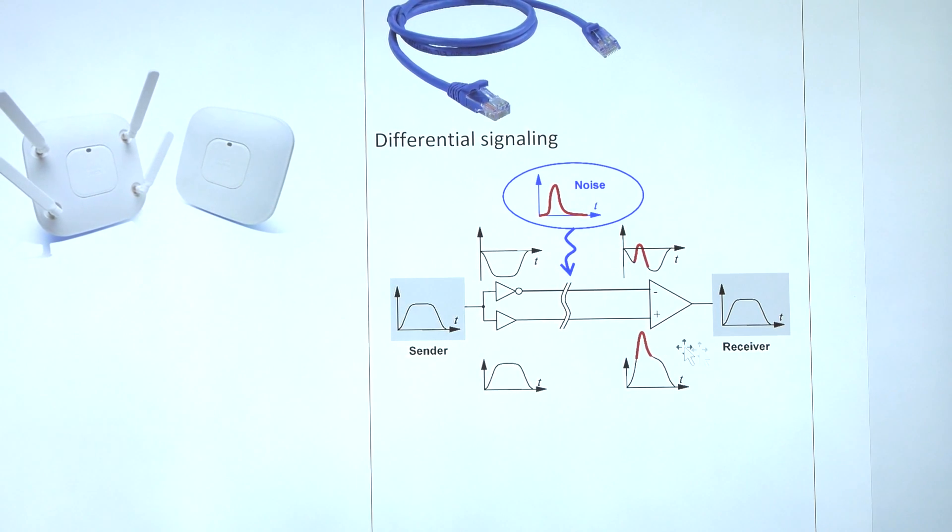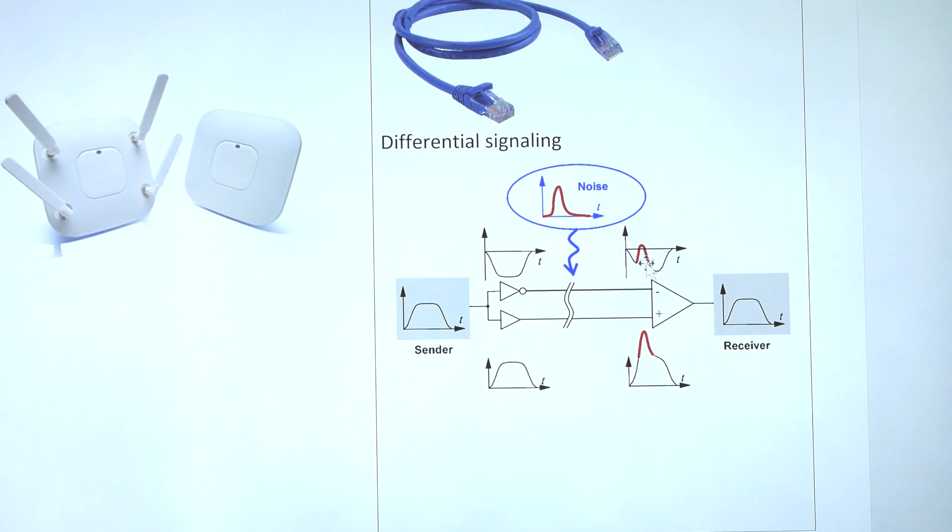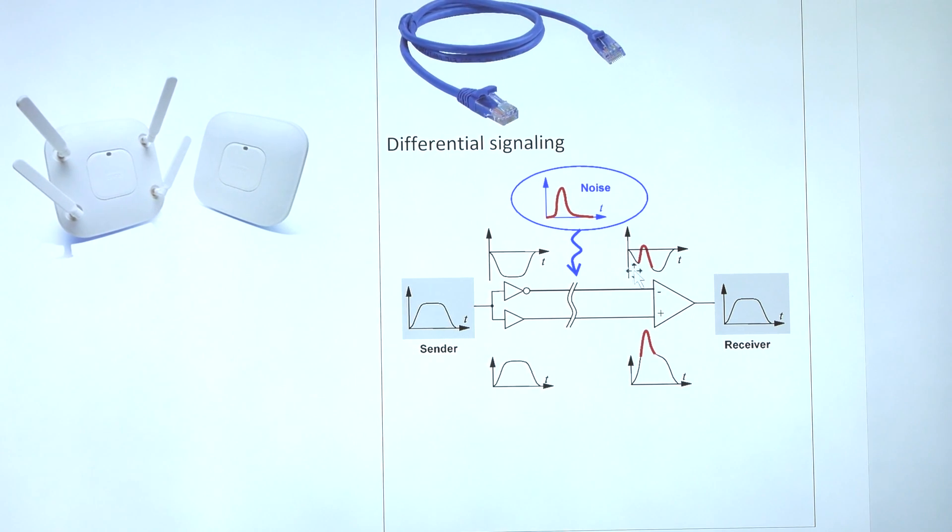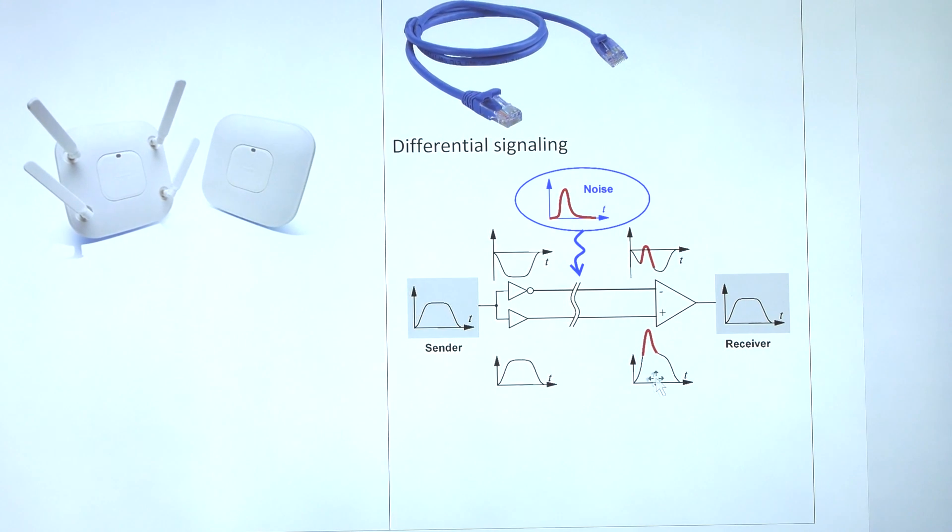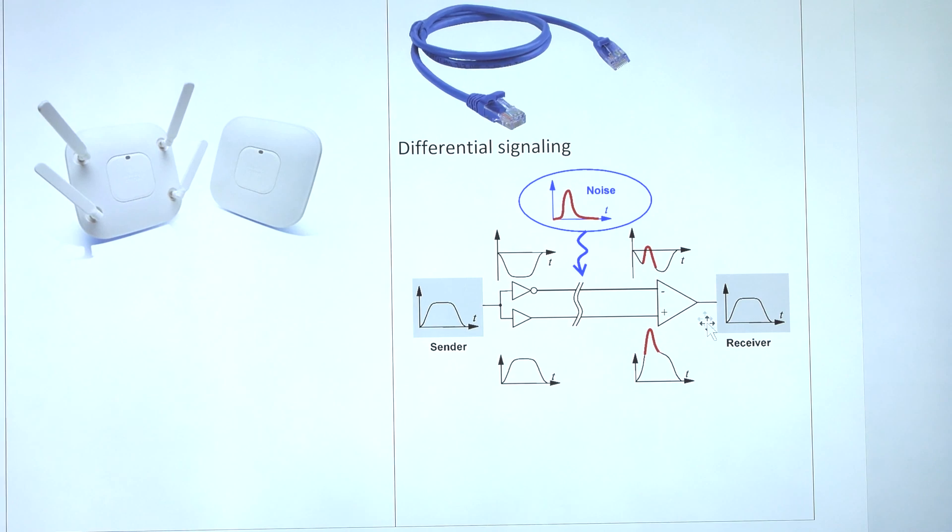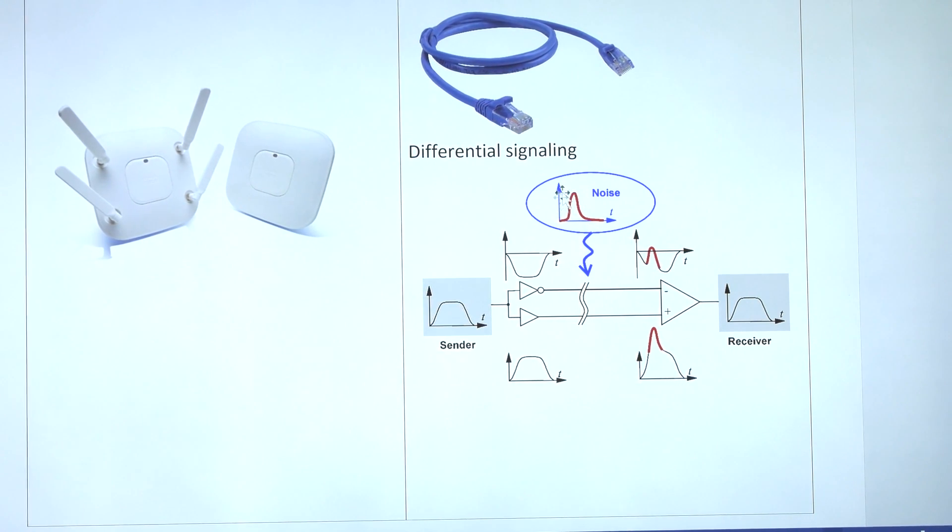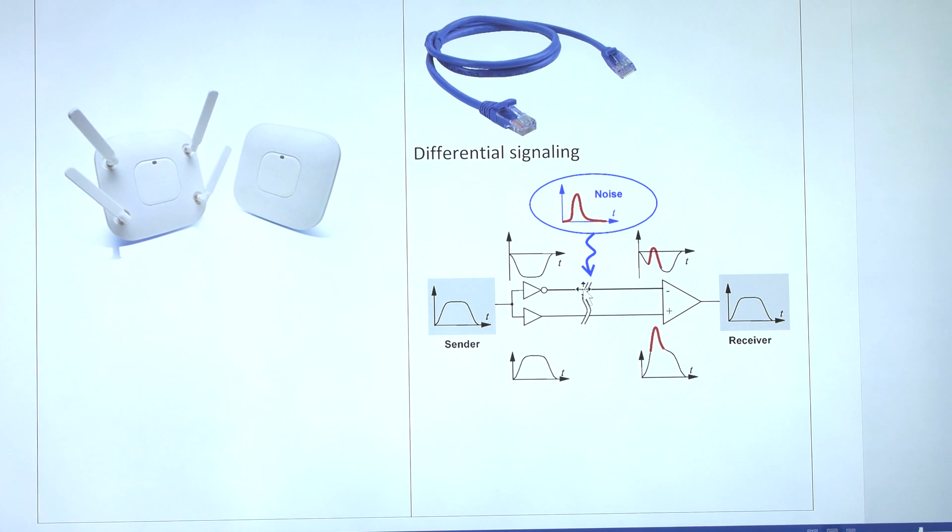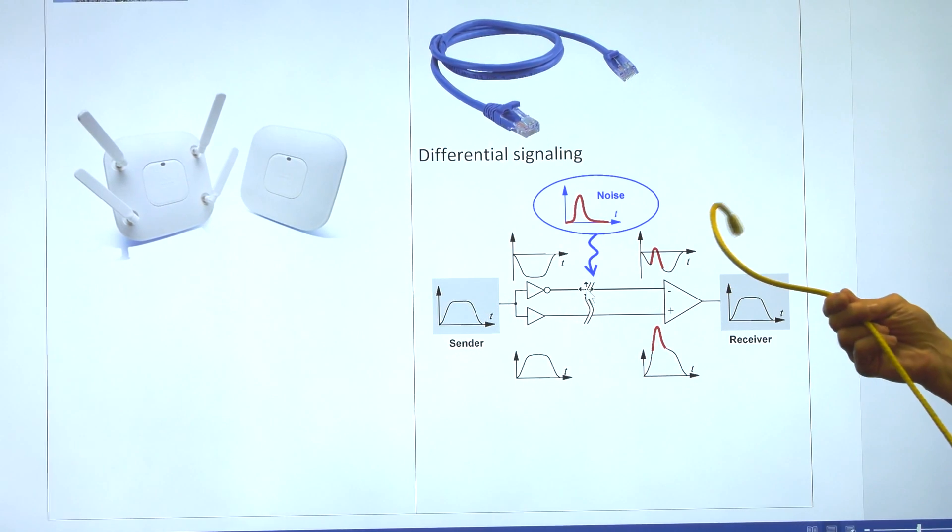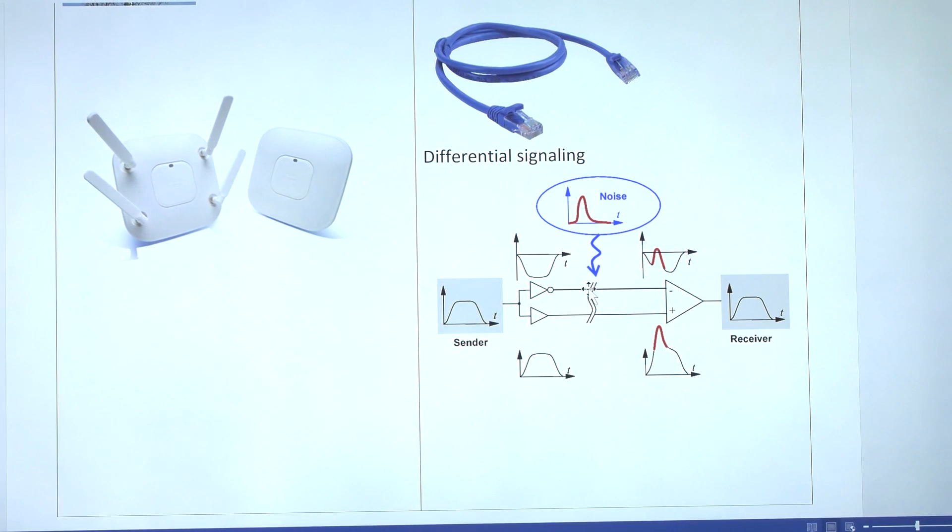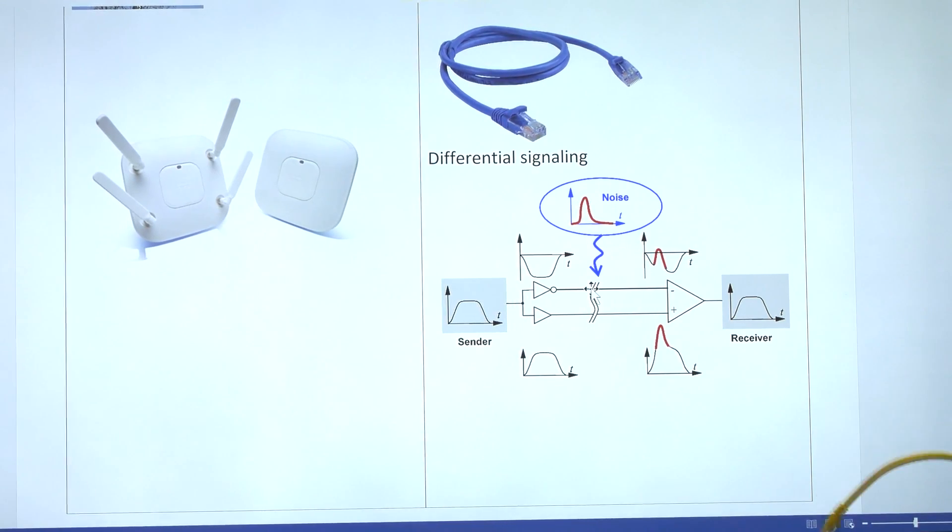What happens though is by the time it gets to your network card, you can see the noise has impacted that negative signal and the noise in red has impacted the positive signal. But because we're using differential signaling, these two are the same. The signals that we want are opposite but equal, and what we see is a total rejection of this red noise that has been put on this cable. It's gone, it's eliminated.